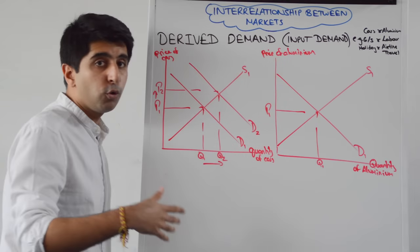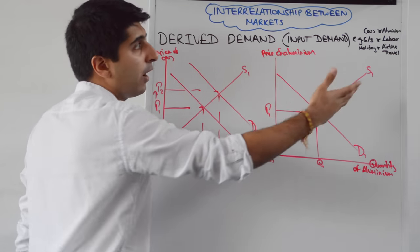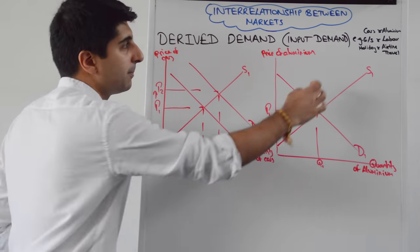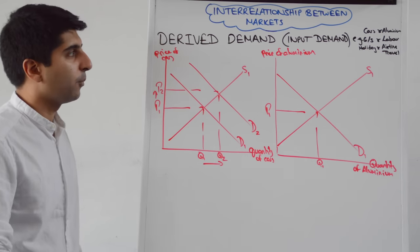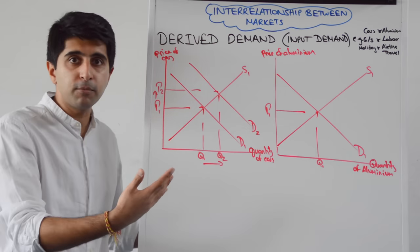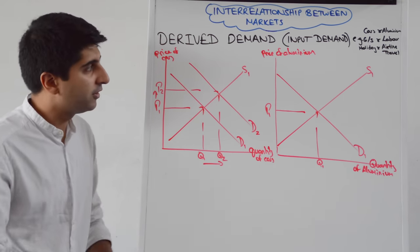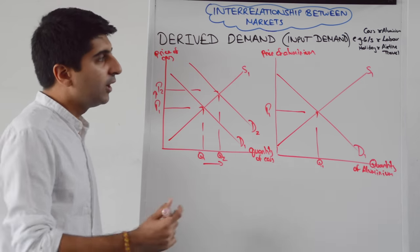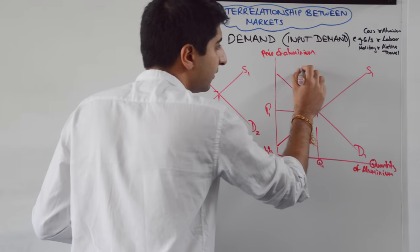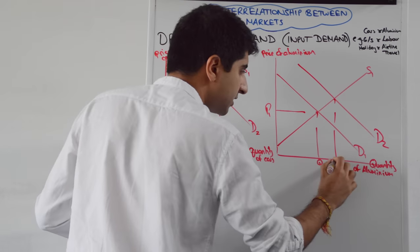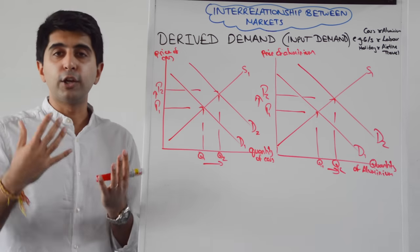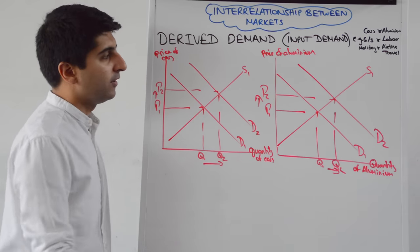Some great examples: on the right-hand side is always the derived demand. Aluminium is a demand derived from the demand for cars. Labour is a demand derived from the demand for goods and services. Airline travel is a demand derived from the demand for holidays abroad or for business. Looking at a diagram, we have the car market on the left. If there is an increase in the demand for cars, there will be an increase in the demand for the input — aluminium. The demand for aluminium is derived from the demand for cars, so when demand for cars goes up, demand for aluminium will shift to the right.